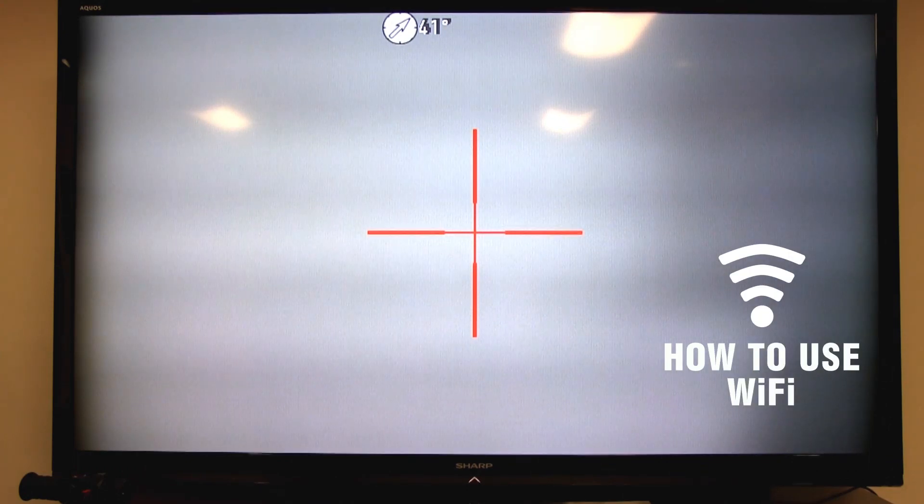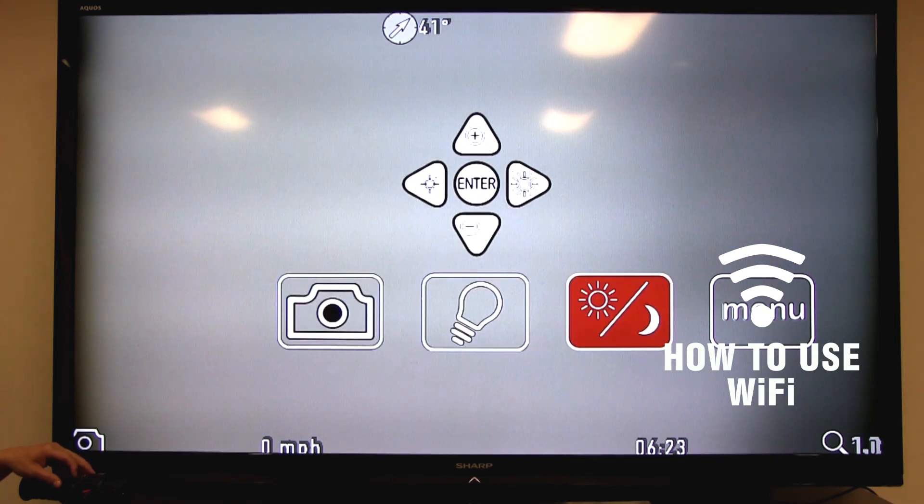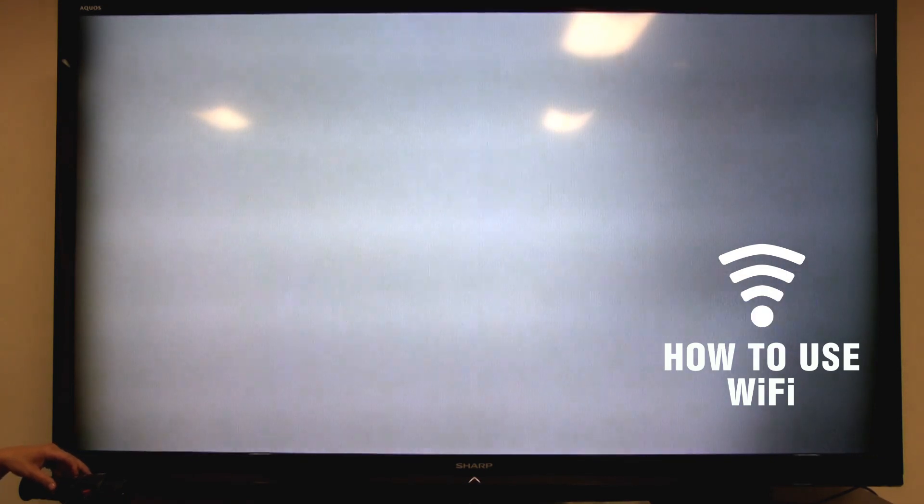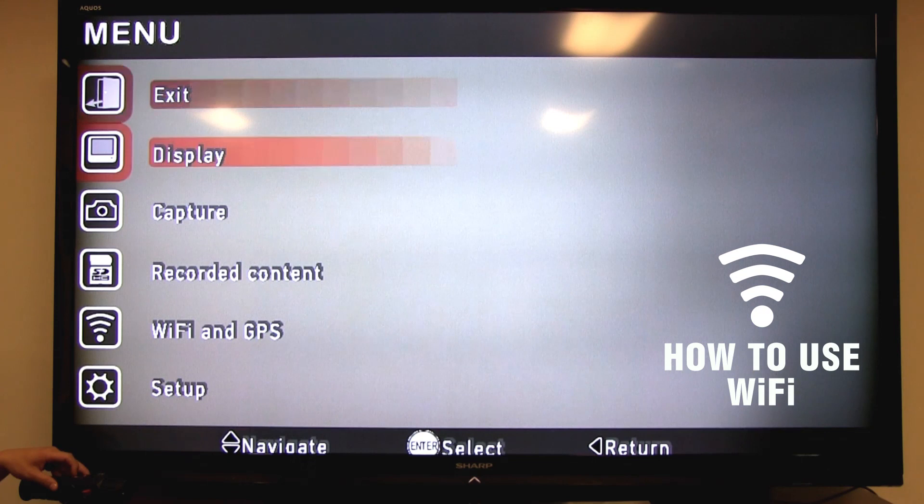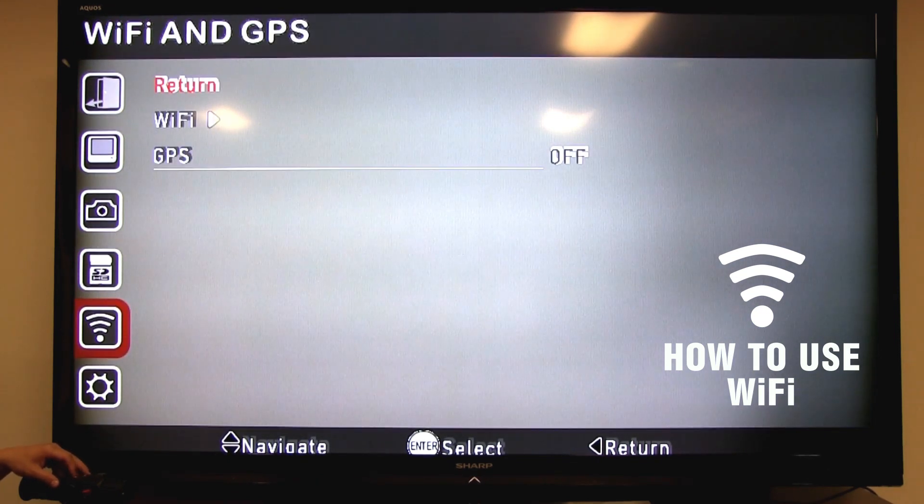Let's discuss the Wi-Fi feature of the X-Sight. The X-Sight can connect to any tablet or phone with our free ATN Obsidian app, available in the Apple App Store or the Google Play Store. To turn on the Wi-Fi in the X-Sight, press the enter button twice to bring up that user interface. Select the menu icon, and press enter. Move down to the Wi-Fi and GPS menu, press enter. Move down to the Wi-Fi menu, and press enter.